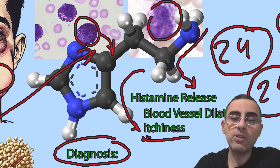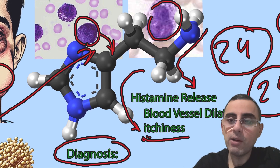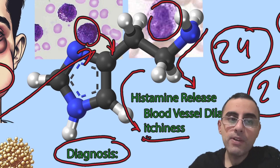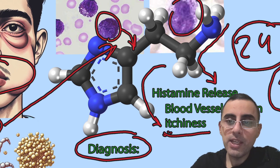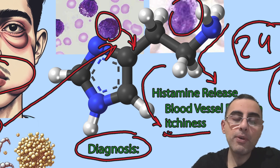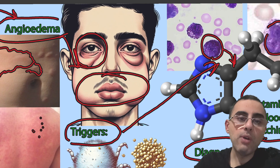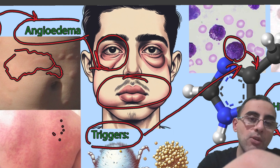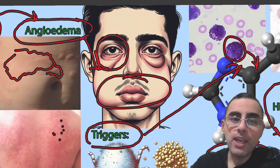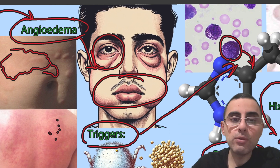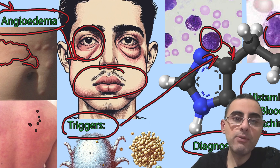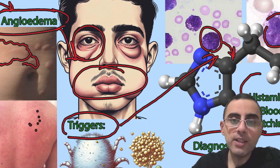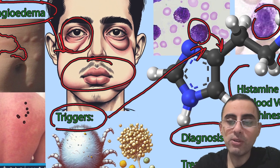Generally hives will resolve in 24 hours, but complete clearance of the condition may need around six weeks, which is normal. However, if hives occurs chronically, such people are more prone to angioedema, which is a complication of hives, and also more prone to anaphylaxis, which is a very severe and life-threatening condition.